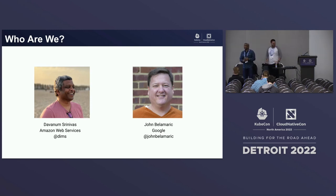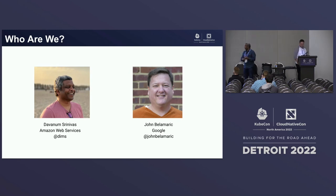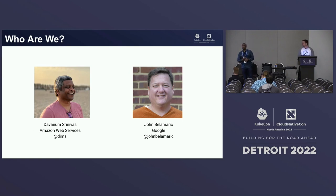My nickname is Dims. You can find me at Dims on Twitter, GitHub, and the CNCF and Kubernetes Slack channels. I work for Amazon Web Services as a principal engineer in EKS.